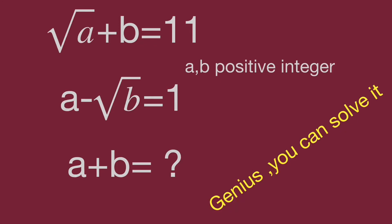Hello! We have given: √a + b = 11, a - √b = 1, and a and b are positive integers. Find the value of a + b. Can you figure it out? Pause the video and give yourself a try. When you're ready, keep watching the video to see the result.